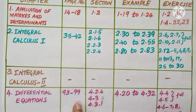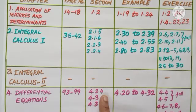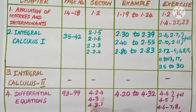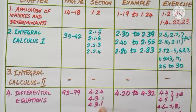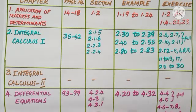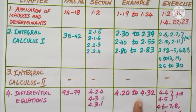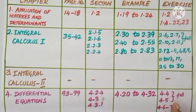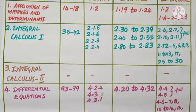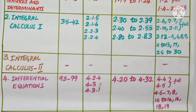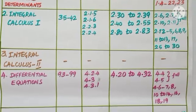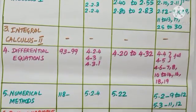Chapter 4: Differential Equations. From page numbers 93 to 99, Sections 4.2.4, 4.3, 4.3.1 are deleted — these are from linear type equations and second-order differential equations. Examples 4.20 to 4.32 and Exercises 4.4 and 4.5 are fully deleted. In Exercise 4.6, objective type question numbers 7, 8, 10 to 14, 16, 18, and 19 are deleted.